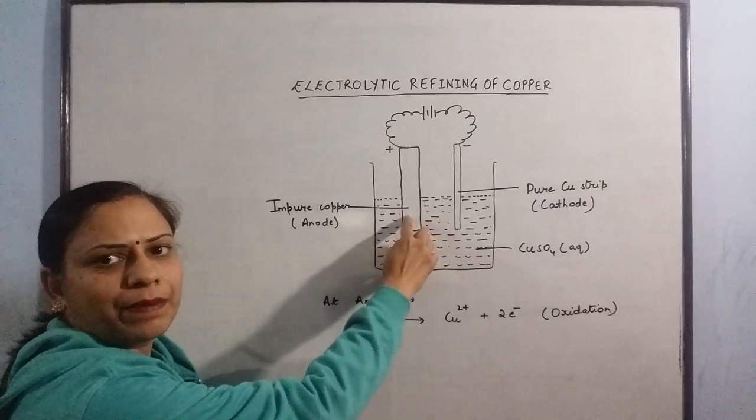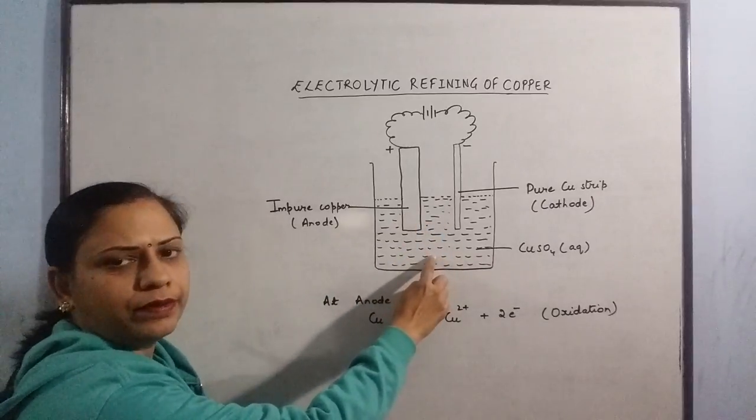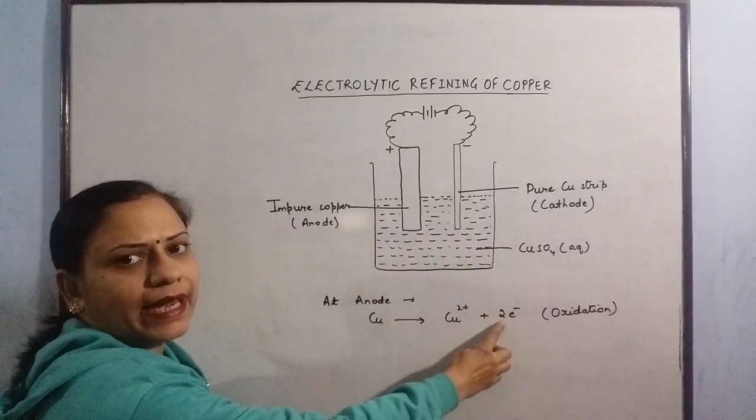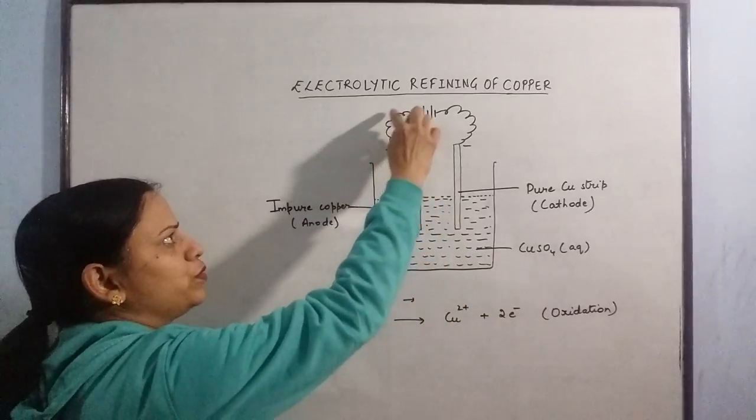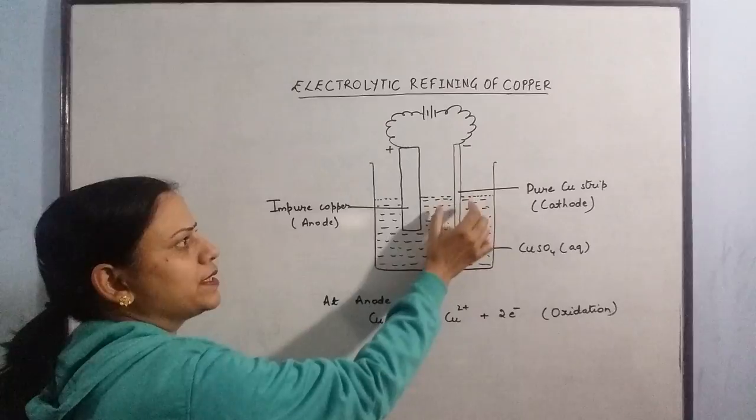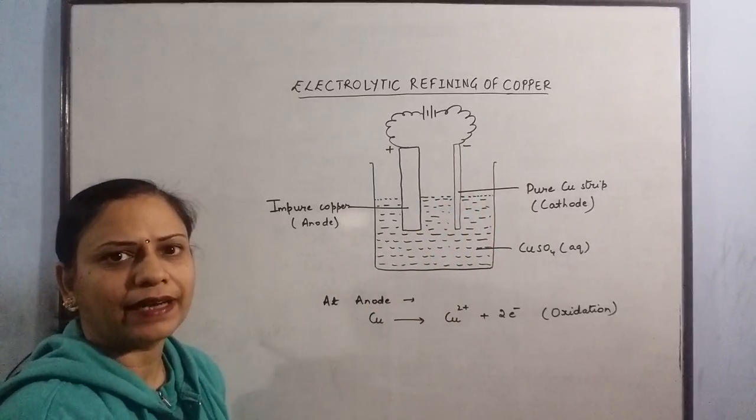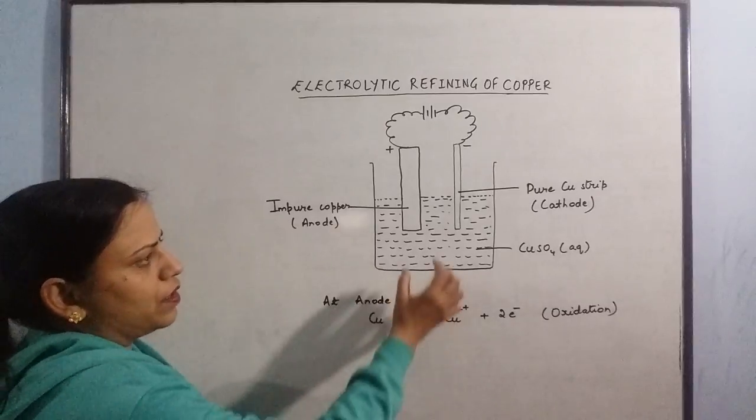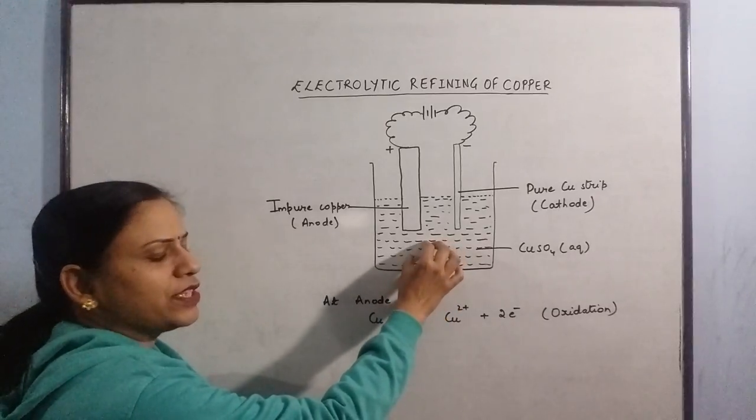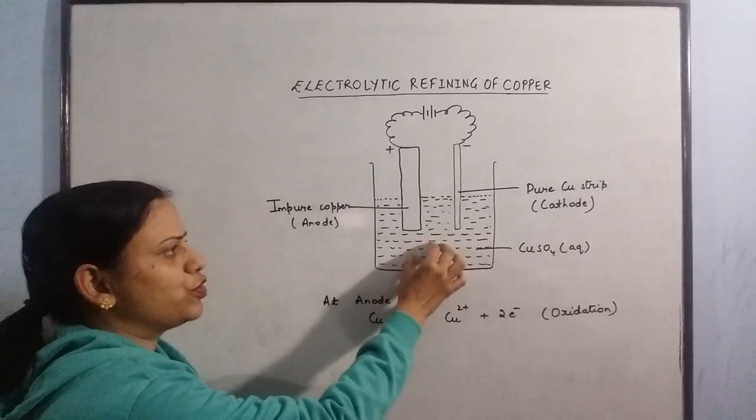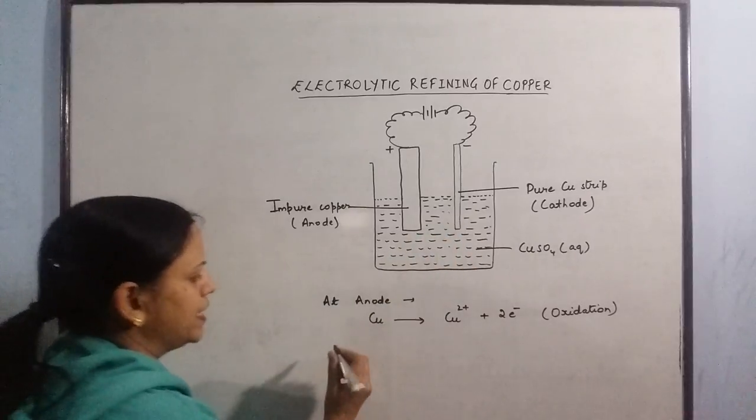The copper ions that are being produced here go in solution. The electrons that are being produced flow through the external circuit and come towards the cathode. Since more and more negative charge is being collected at the cathode, the copper ions, positive charge which is being accumulated in the solution, starts getting neutralized.